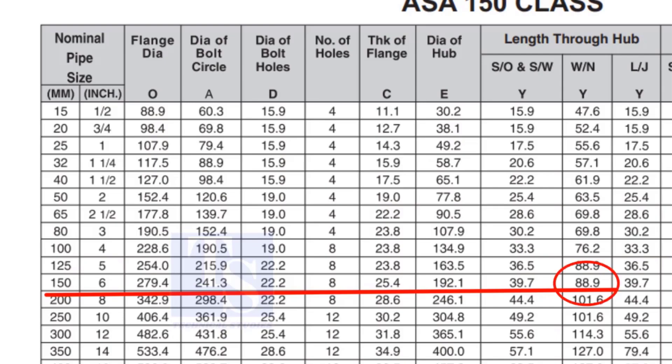Check the height of the flange in the table. Since the pressure rating is 150, the height of the flange is 88.9mm. Note down the height.